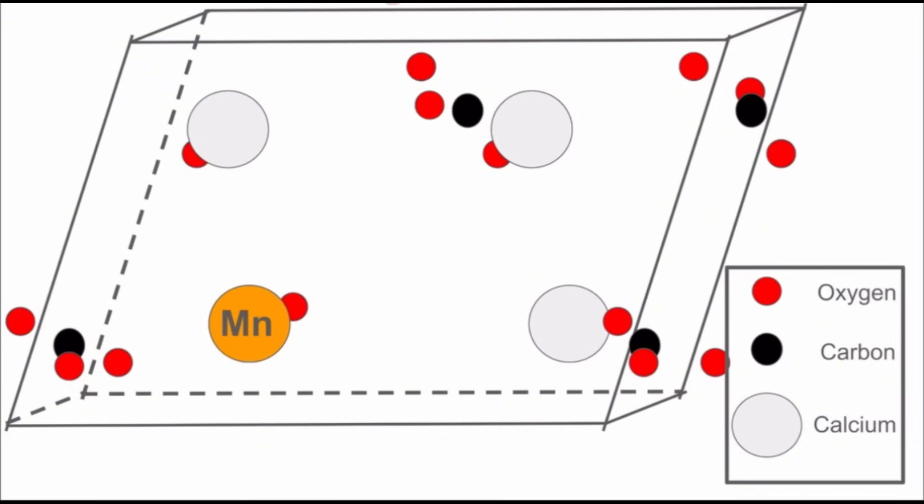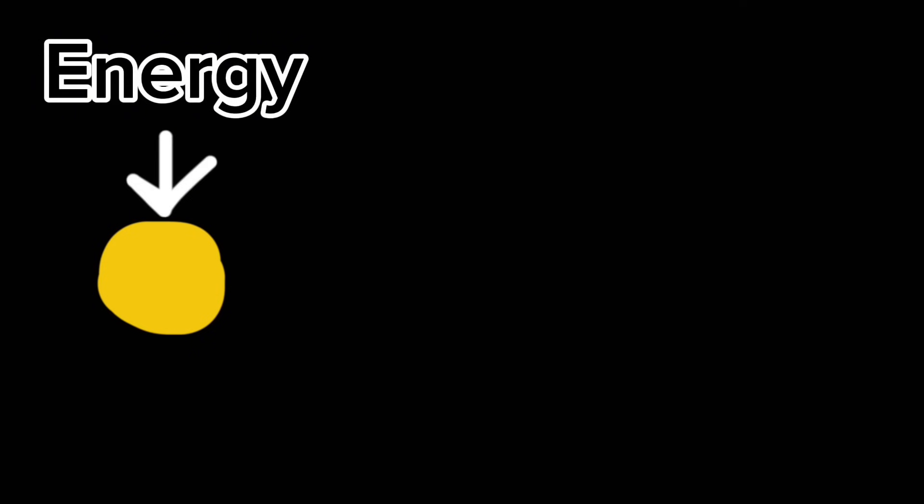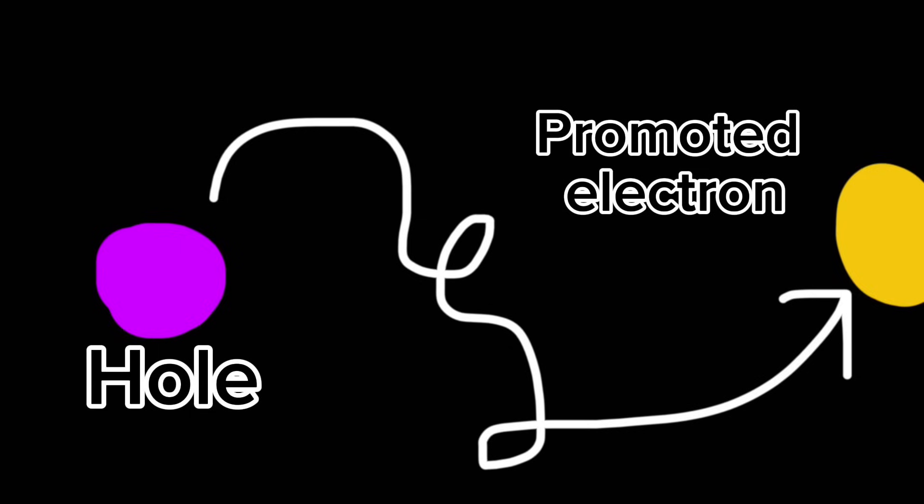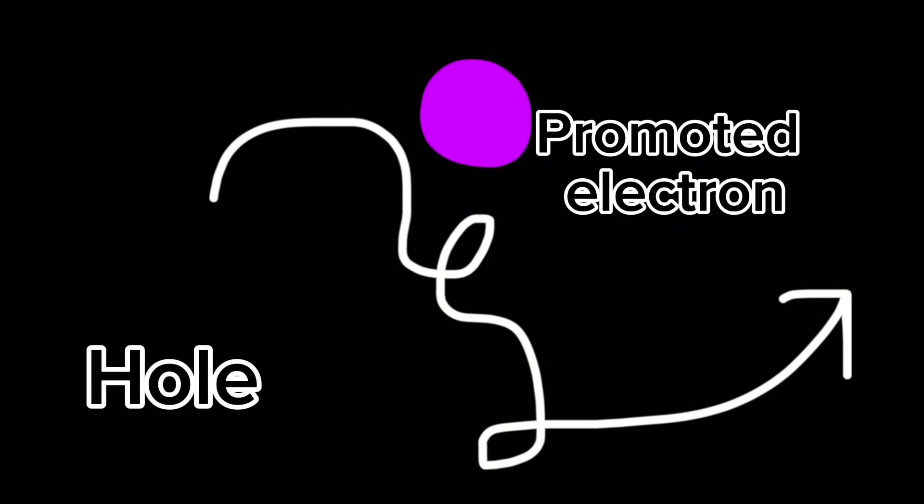When these electrons are promoted to an energy level at which they can conduct, they leave behind a hole at their origin. These holes can be thought of as positively charged absences of electrons. They aren't real particles as we think of electrons or positrons or protons, but they do behave as positive charge carriers and are mobile.